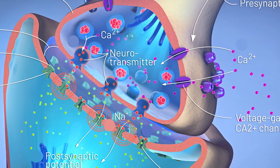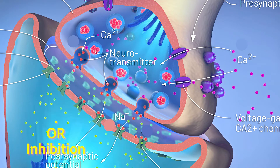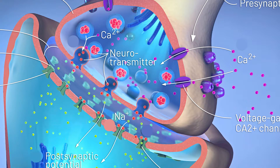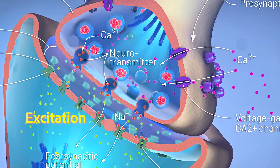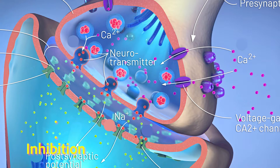When that happens, the effect on the next cell is determined by whether the neurotransmitter released is an excitatory neurotransmitter or an inhibitory neurotransmitter. If it's excitatory, it's going to bring that second cell closer to depolarization, making it more likely that the electrical impulse will start down that second cell. If it's inhibitory, it makes depolarization less likely.